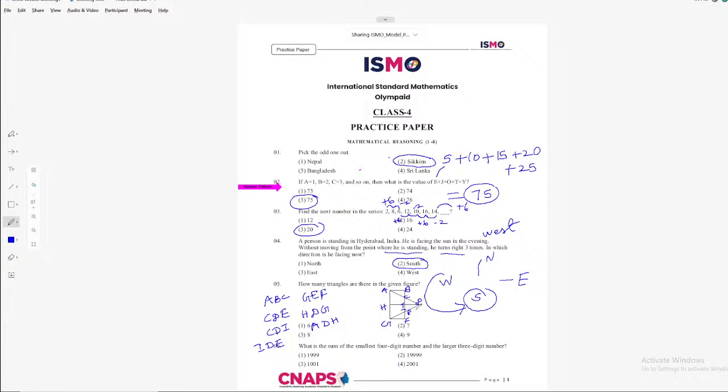Let us see whether any other triangle missed. Yeah. A, D, G. The biggest triangle among the given. A, D, G. So count them. How many? 8. So in this figure there are 8 triangles option 3. I hope you are following.